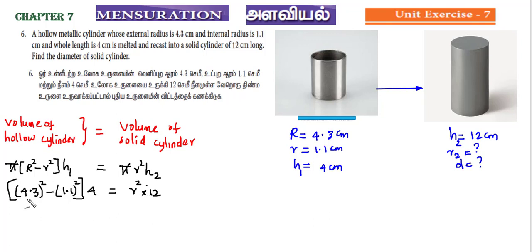If we multiply 4.3 into 4.3: 3×3 are 9, 3×4 are 12, 4×3 are 12 remainder 1, 4×4 are 16 plus 1 is 17. 9, 4, 8, 1. With the decimal, 18.49. The answer is 18.49.